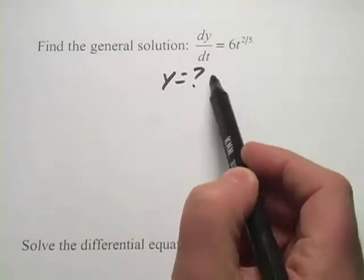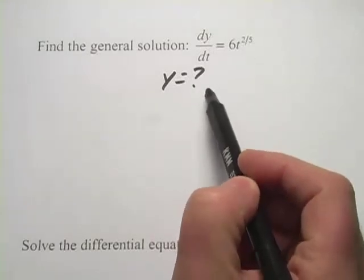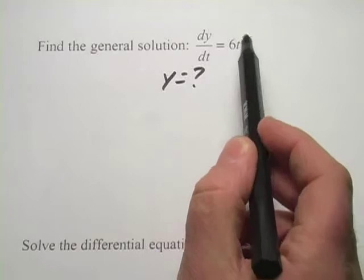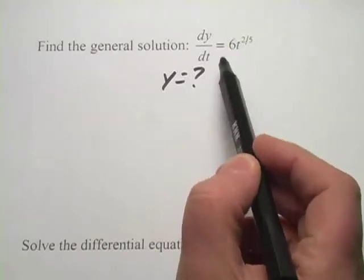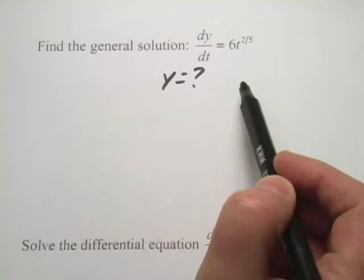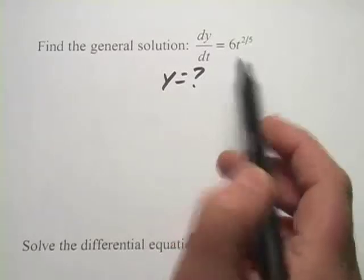To take the antiderivative to kind of go backwards to the function, what we're going to do is we're going to increase that power by one, and then we're going to multiply out front by the reciprocal of that power. Let me show you how it works in this case.